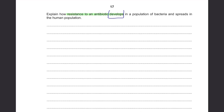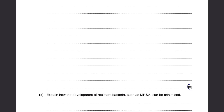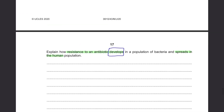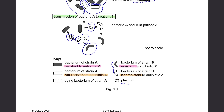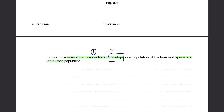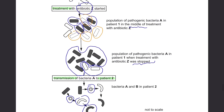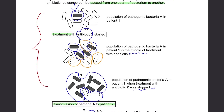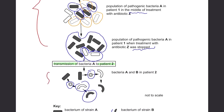Explain how resistance to an antibiotic develops in a population of bacteria and spreads in the human population. This is a pretty important question because it's worth six marks, and you really have to understand this diagram properly in order to answer this question. As stated in the question, the resistance to an antibiotic develops in a population of bacteria within its own, then spreads in the human population. The first three drawings represent the bacteria with resistance multiplying by themselves, and the last one shows it can be transmitted to patient 2, which is a human.